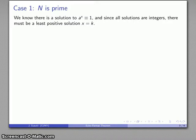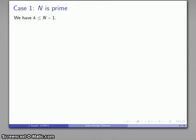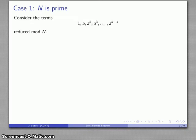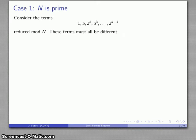Since all solutions are integers, there has to be a least positive solution — call it x = k. I know that k must be less than or equal to n minus 1. So let's consider the powers of a starting with a^0 = 1 all the way up to a^(k-1), reducing those mod n.